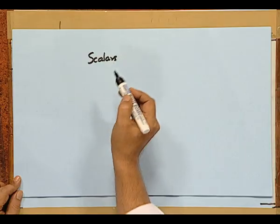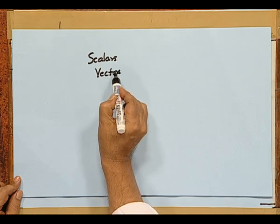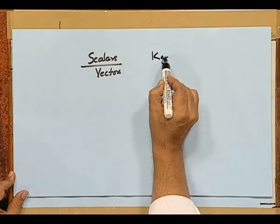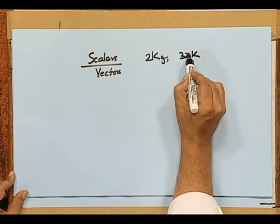There are quantities in physics which are generally characterized as either scalars or vectors. When we say a scalar, we mean a quantity which is specified with a certain magnitude — for example, temperature and mass. These are quantities represented by a certain magnitude, like 2 kg or temperature 320 K. These quantities are specified by their magnitude and a corresponding unit.